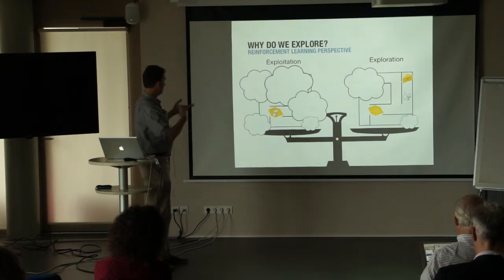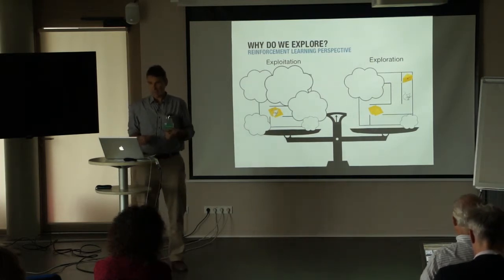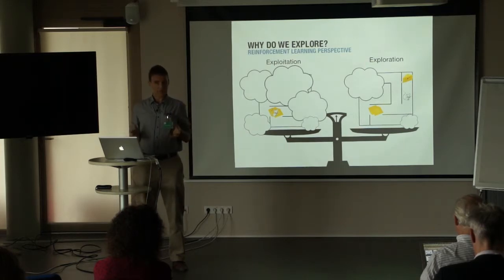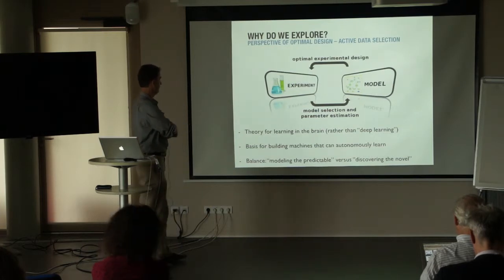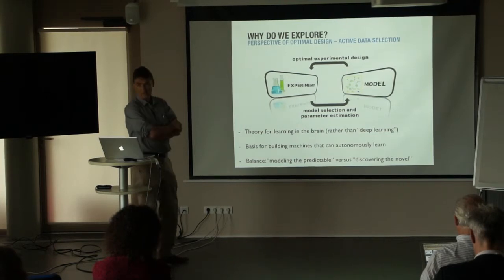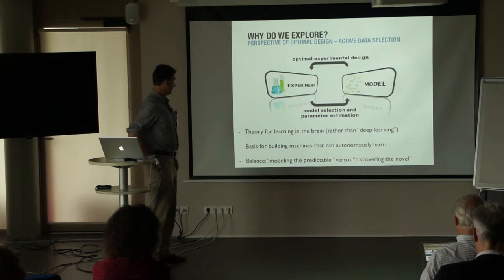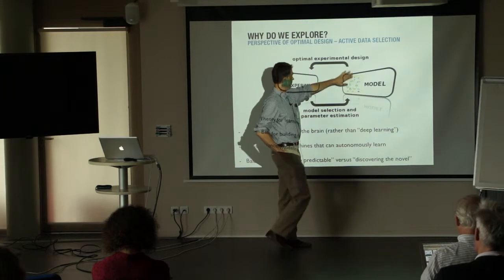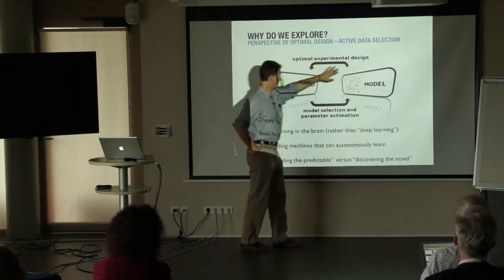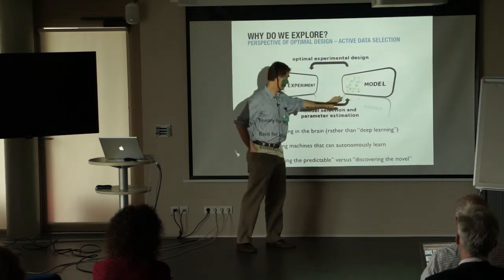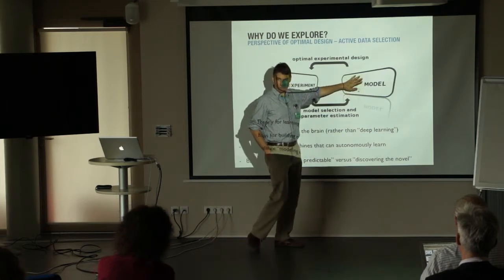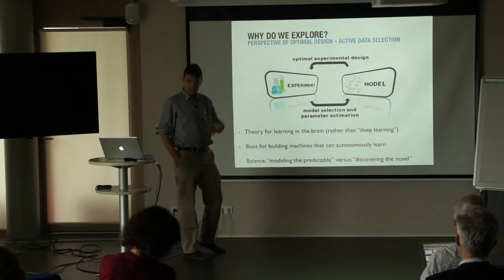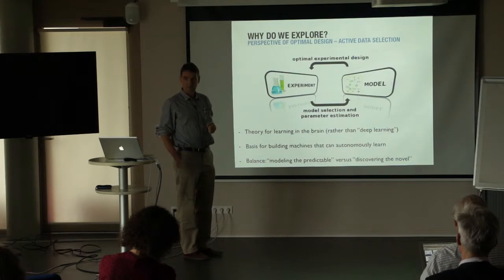We've heard a lot about the balance between exploration and exploitation — I will not talk about that. I'm interested here in what drives exploration in the absence of reward. The way I think about it is in terms of optimal experimental design: the agent has a model of the outside world, performs an experiment by doing an action, samples the world by getting some sensory input, and uses this for model selection and parameter estimation, then updates the model to create a new action.